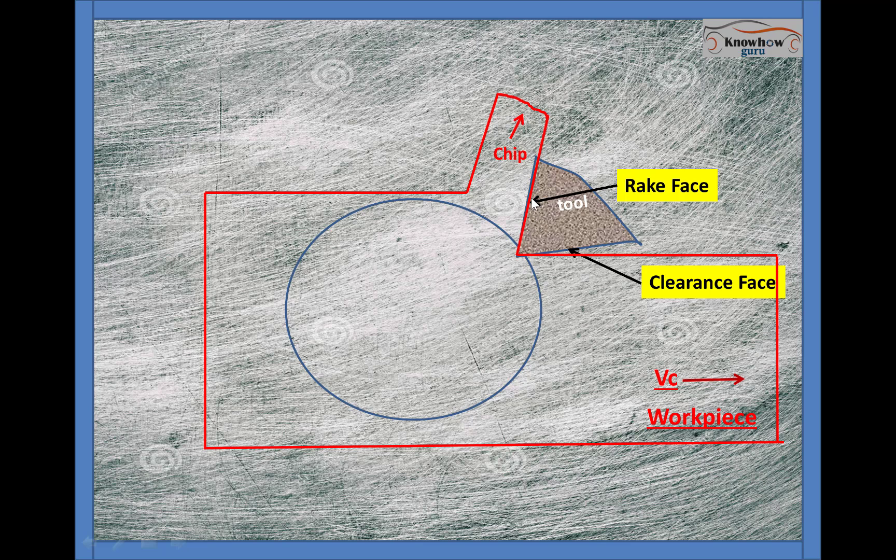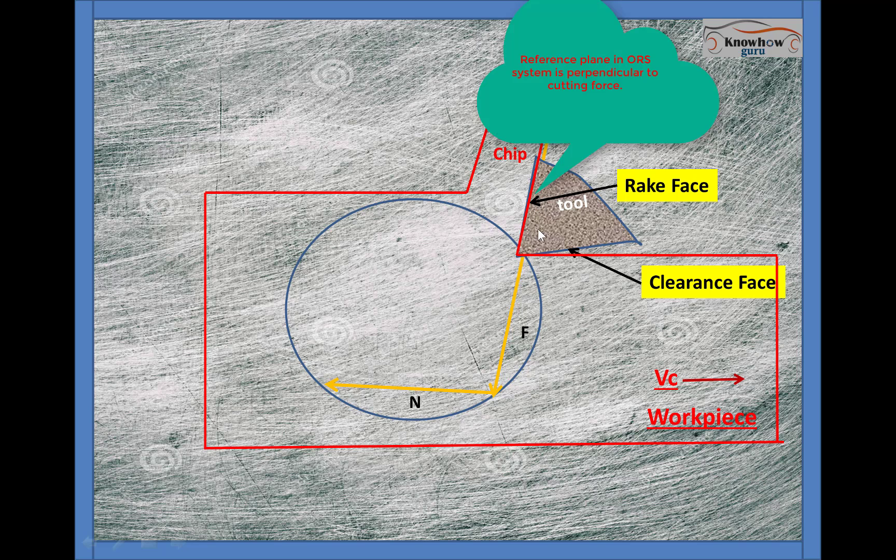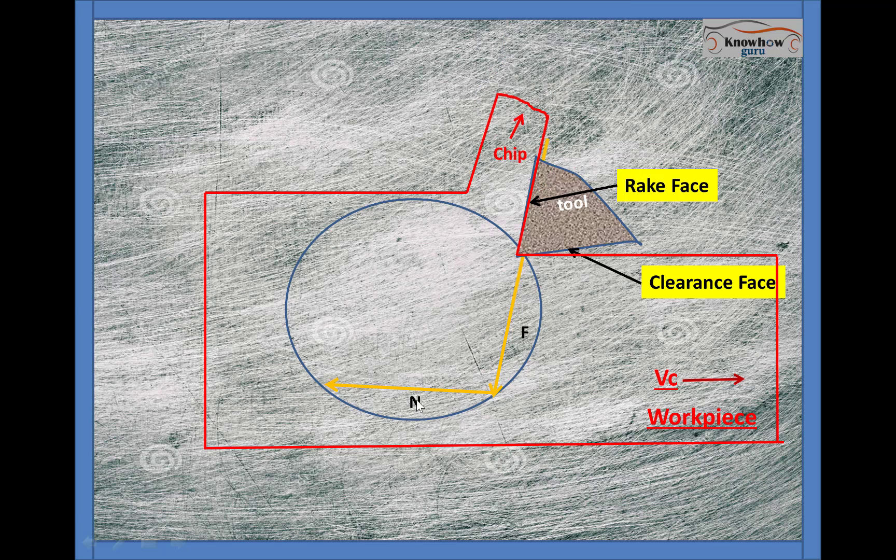The chip is flowing upward in this direction, so your frictional force will be in the downward direction. This is your frictional force lying on the rake face at the same angle with the reference plane. Normal to that, we call it the normal frictional force. The resultant of both is the diameter of the Merchant's Circle.